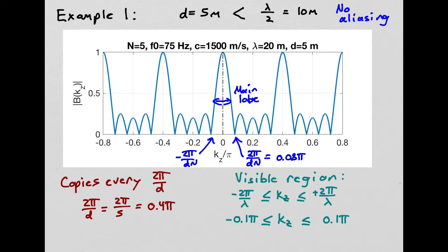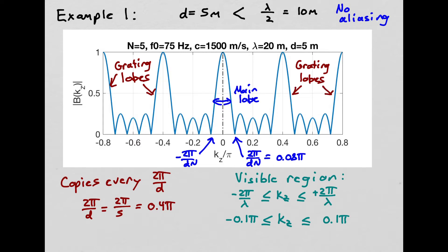For this discrete sinc function, we get copies at integer multiples of the spatial sampling frequency 2π/D. For our example, 2π/D equals 0.4π, so every 0.4π we get copies of the main lobe. These copies are called grating lobes, and they continue out to infinity on either side if we were to plot beyond the shown range.